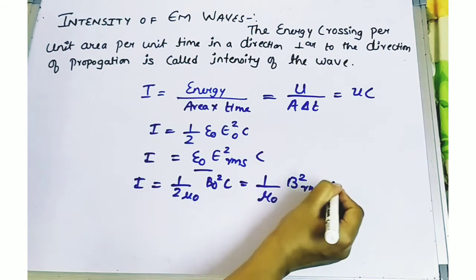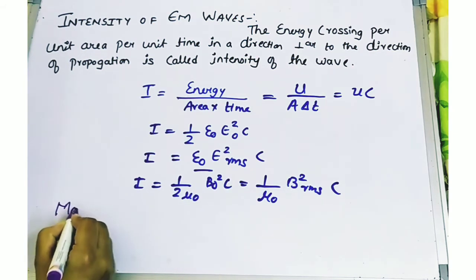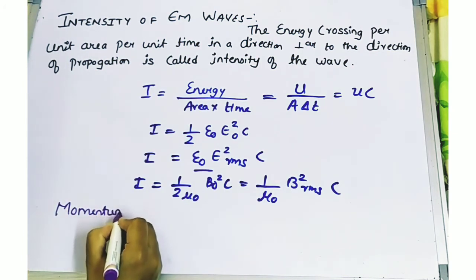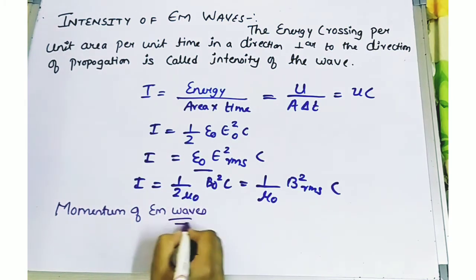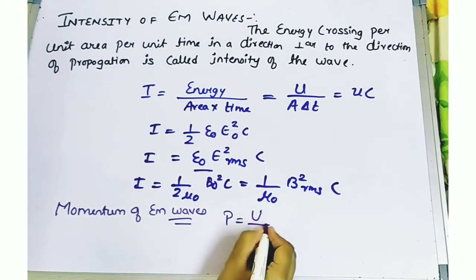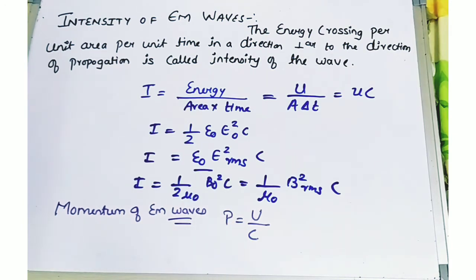The momentum of EM waves is given by p equals U upon c, where U is the energy and c is the speed of light. This is the expression to keep in mind for this chapter. With this we have completed this chapter.